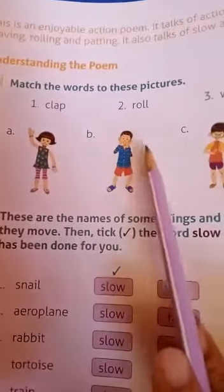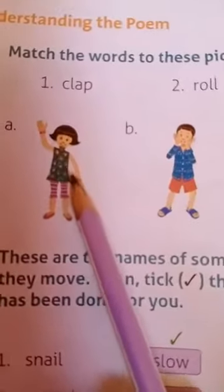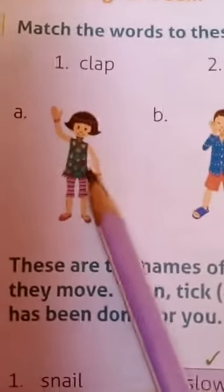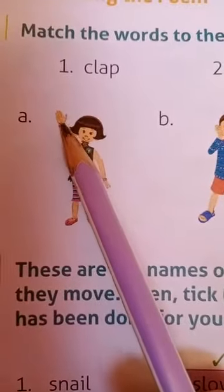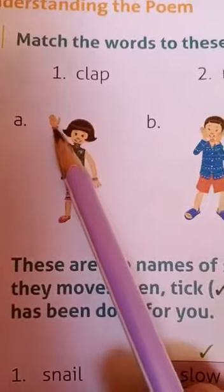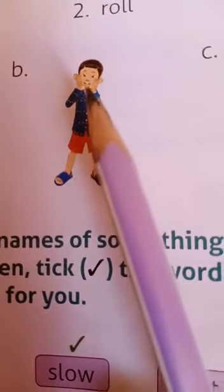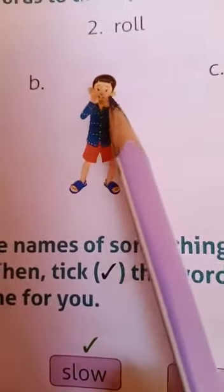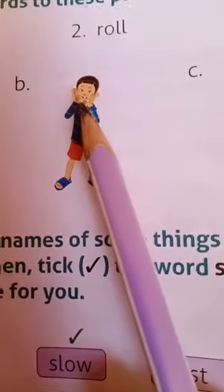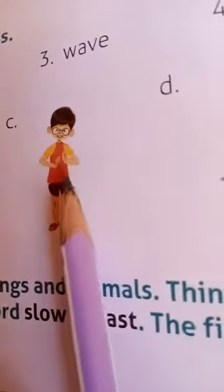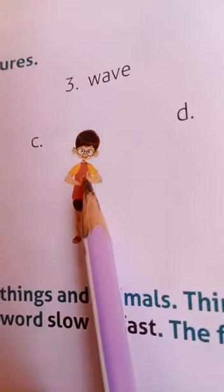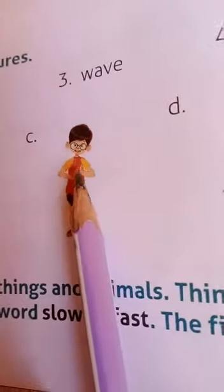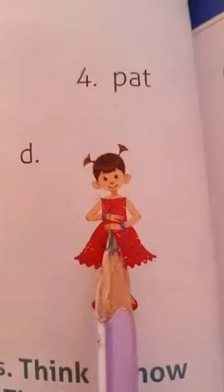Now look at these pictures. What is this girl doing? She is waving. Look at this boy. What is he doing? He is patting. And look here — he is clapping. And what is she doing? She is rolling her hand.